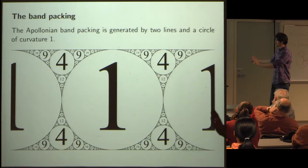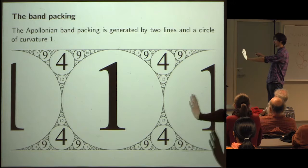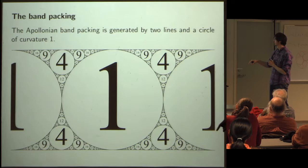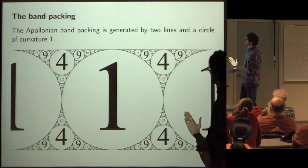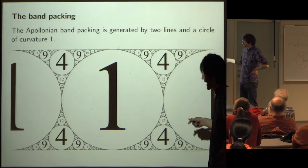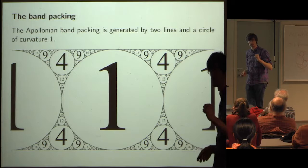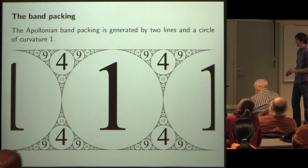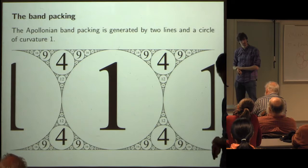The fractal structure of the sandpile PDE is given by this circle packing. The numbers on the circles are the curvatures (one over the radius) — there are integer Apollonian circle packings where all the curvatures are integers.